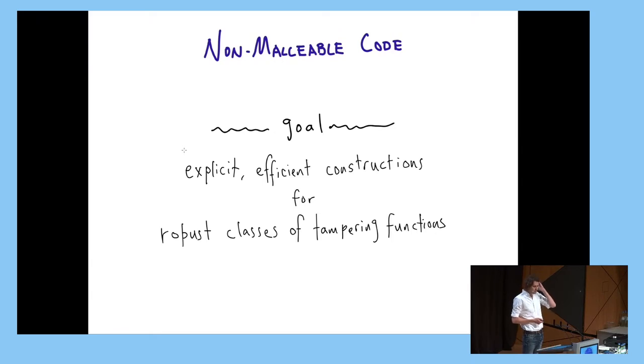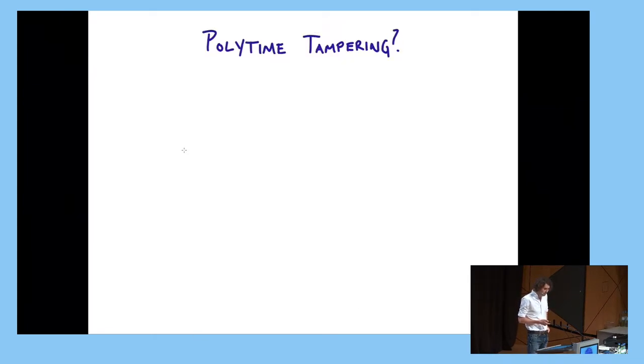So the goal in non-malleable codes is to construct, like all coding theory, explicit constructions where you can encode and decode efficiently for robust tampering classes. You can't handle arbitrary tampering. Some things that have been considered are split state, you'll hear about some of this later today, small depth circuit tampering, some space bounded tampering, a variety of other examples. But as cryptographers, what would we like? We would like to handle any efficient tampering procedure.